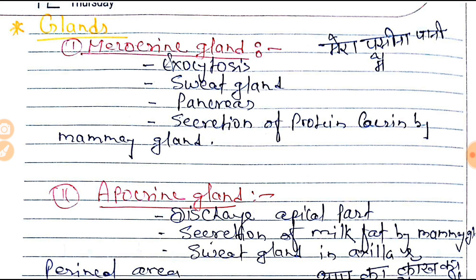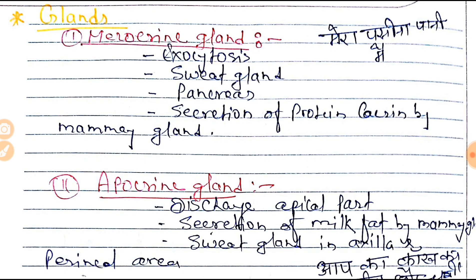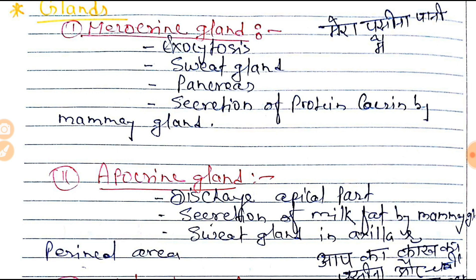The first type is the merocrine gland. Merocrine gland secretes by exocytosis. Examples are the sweat gland, pancreas, and secretion of the protein casein by the mammary gland — it is a protein secretion in the merocrine gland. You can easily remember this with the Hindi trick: 'Mera Paseena Paani Mein.' Mera indicates merocrine gland, Paseena means sweat gland, Paani means pancreas, and Mein is for milk of the mammary gland.